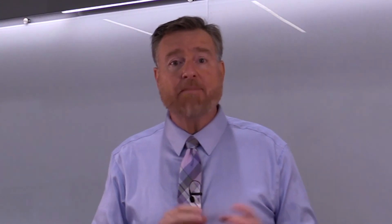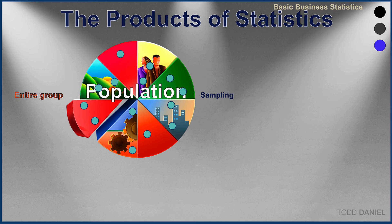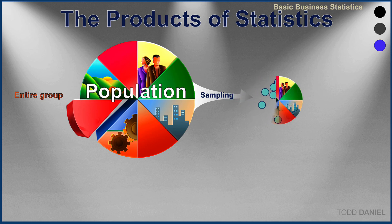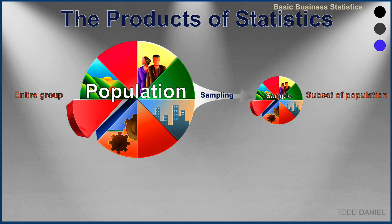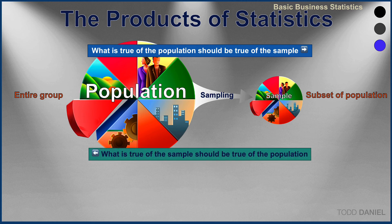We don't necessarily want to know about that small group — the sample we're measuring. Instead, we want to know about the large group, called a population: the entire group about which we want to know something. We will randomly sample individuals from that population in a procedure called sampling. Any sample drawn from a population should be very similar to that population. What is true of the population should be true of the sample, and working the other direction, what is true of the sample should be true of the population.